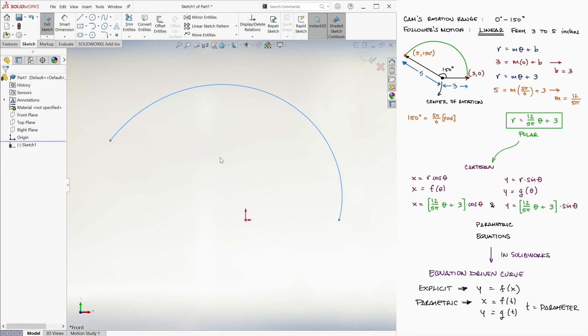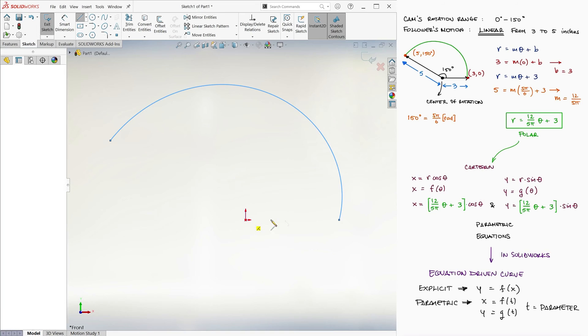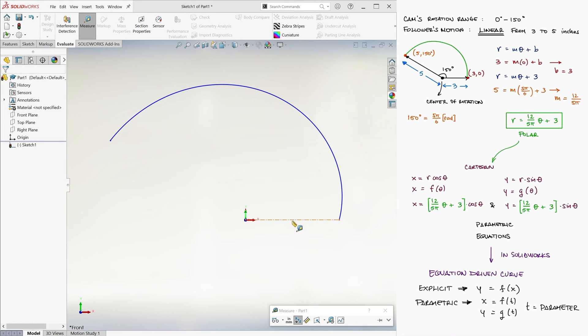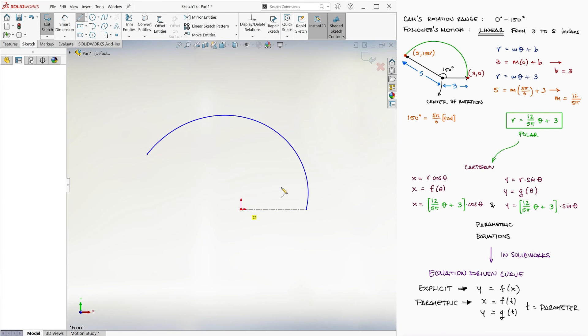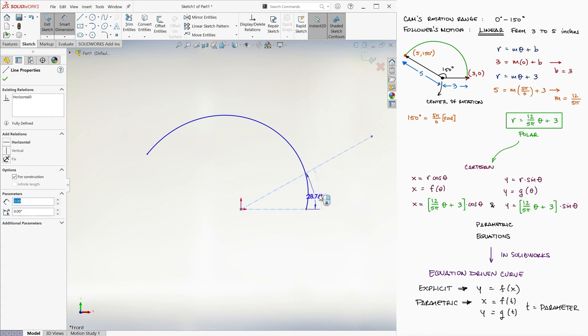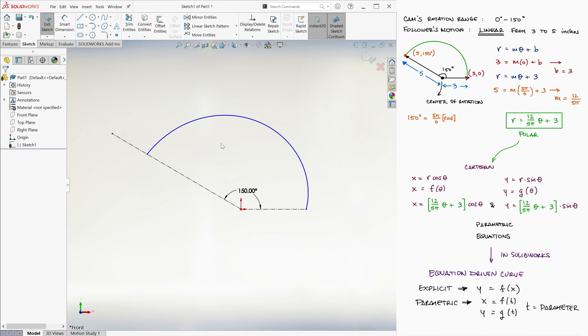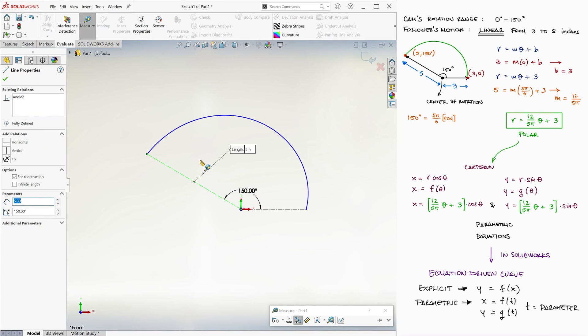Here we can make sure that the values are correct. For example, at a 0 degree angle, the distance between the origin and the line should be 3. We create a centerline from the origin at 0 degrees and measure it to be 3. And that's good. We create another centerline, set it to make a 150 degree angle, trim the excess, and measure its distance. And great, it's 5, just like we wanted.